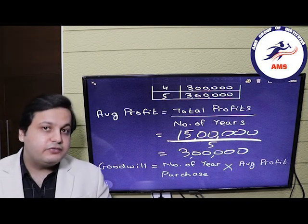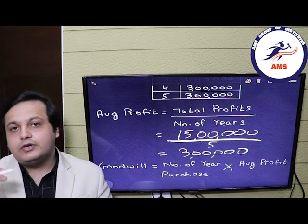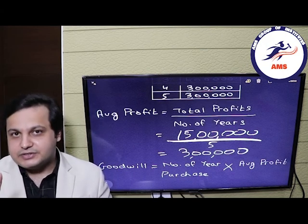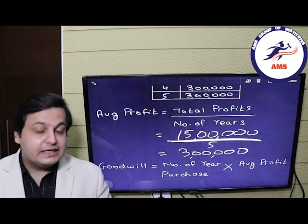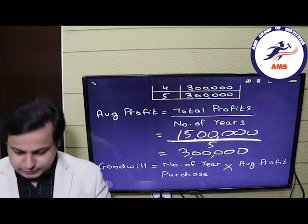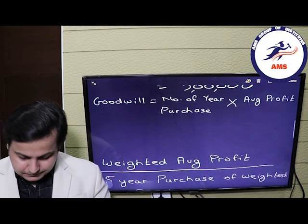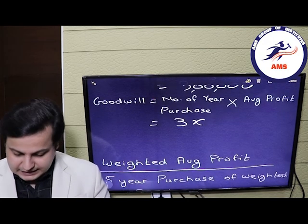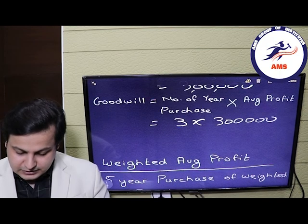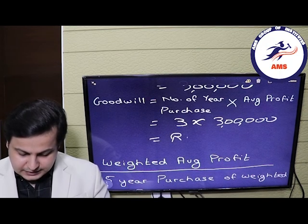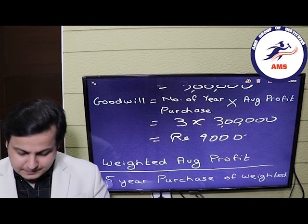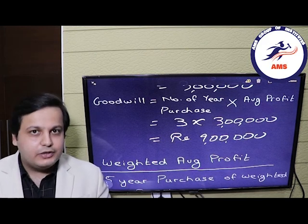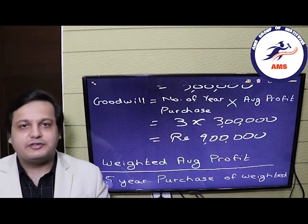This is the average profit and not the goodwill, mind you. In order to calculate the goodwill, we will have to multiply the average profit with the number of years purchase. In our question, the number of years purchase was 3. So the goodwill will be 3 into 3 lakhs, which comes out to rupees 9 lakhs. This is how you calculate the goodwill of a firm using the average profit method.